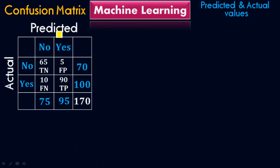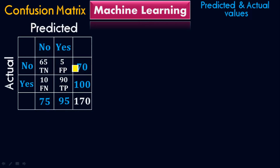In the horizontal (parallel) direction, these are the actual values. So we have true negative, true positive, false negative, and false positive. When you look from the actual side horizontally, these are the No values — 65 plus 5 are No values, so there are total 70 No values. Similarly, in this line, these are the Yes values for the actual. 10 plus 90 equals 100, so we have 100 actual Yes values.